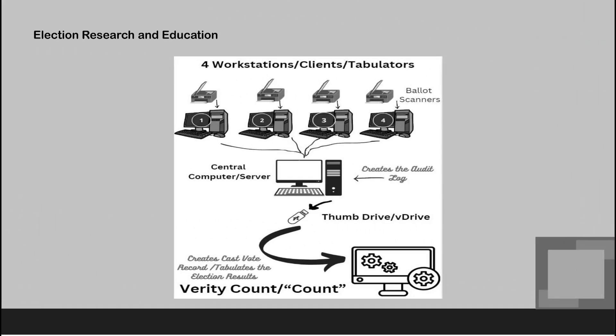The next slide shows the diagram. You have four workstations connected to scanners, all connected to a central computer server. That central unit is supposed to be the air-gapped unit, isolated from external intrusion. That's why we have thumb drive communication — the V-drives are used to transmit ballot counts to Verity Count, where they're all summed up and the cast vote record is computed. The central server is the system that creates the audit log, getting inputs from all four workstations.